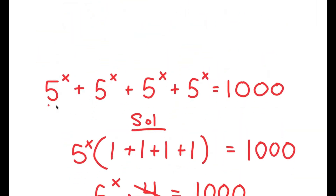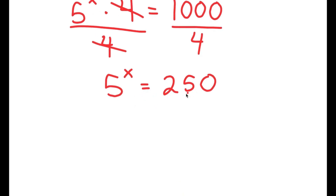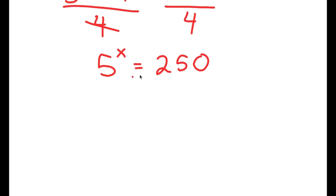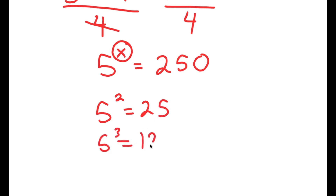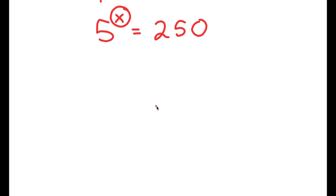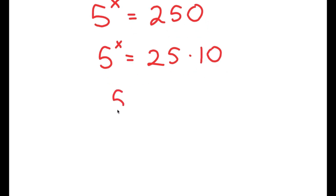So from this large equation, we got up to an equation that is significantly smaller. We have 5 to the power of x equals 250, and just at first glance we can tell that x is not going to be a whole number, because 5 squared is 25, 5 to the power of 3 is 125, and 5 to the power of 4 is 125 times 5, which is 625. So the value of x is somewhere in between 3 and 4. To find the exact value, we're going to rewrite 250 as 25 times 10. The reason is that 25 is the same thing as 5 squared, so I get 5 squared times 10.